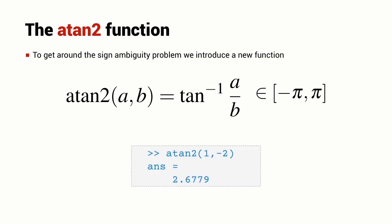And here's a simple example using MATLAB computing the arctangent of 1 divided by minus 2. It gives us the answer of 2.6779 radians, and that's an angle in the second quadrant of the circle.